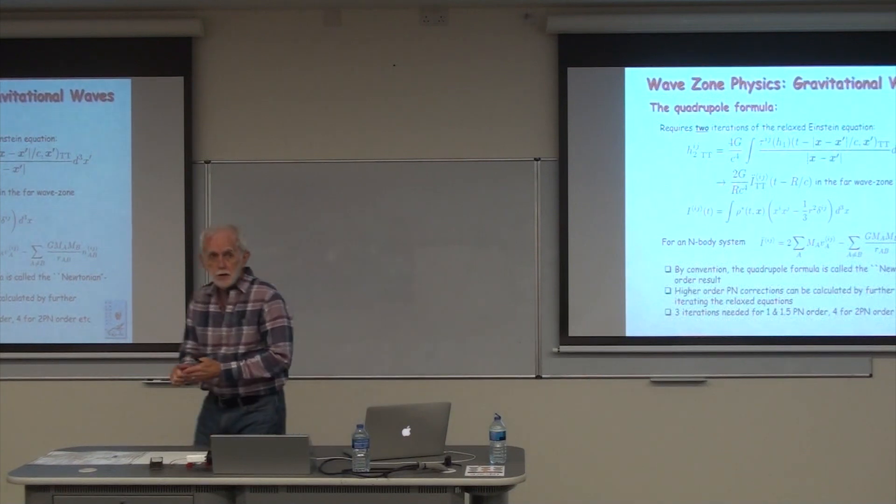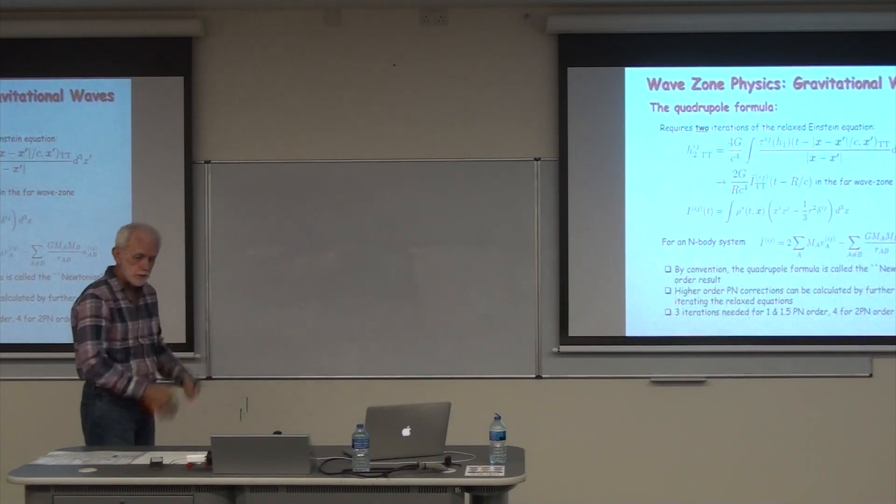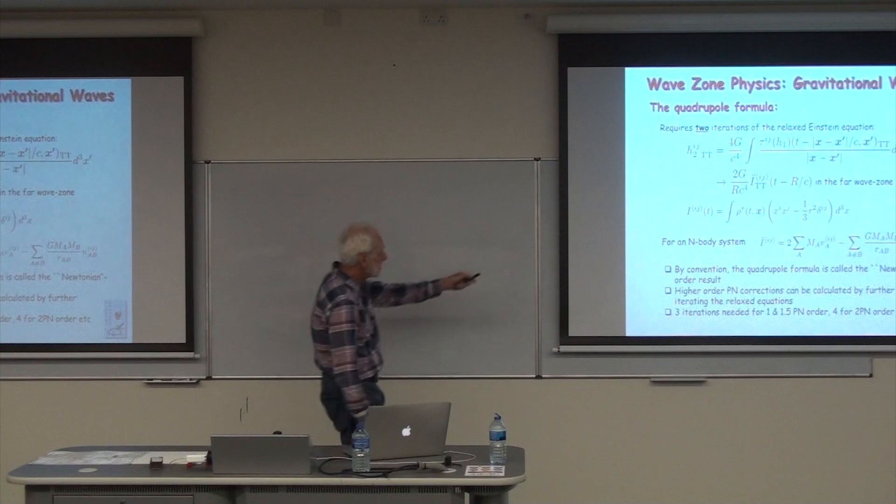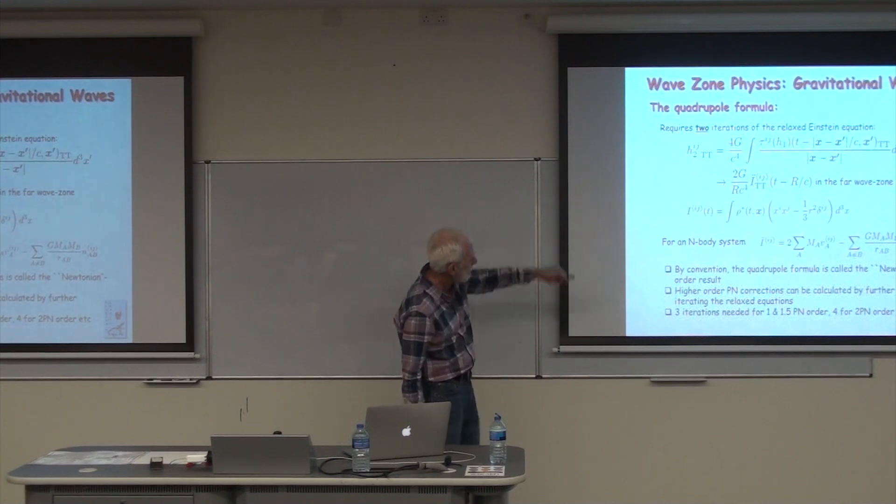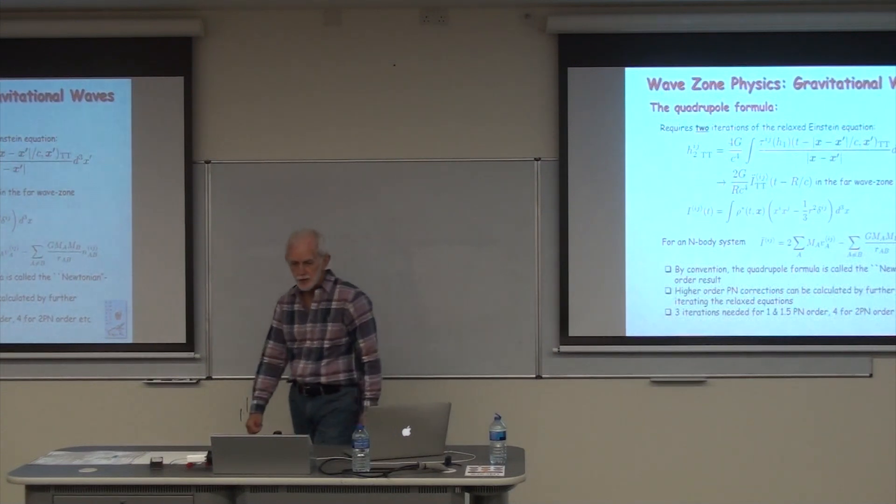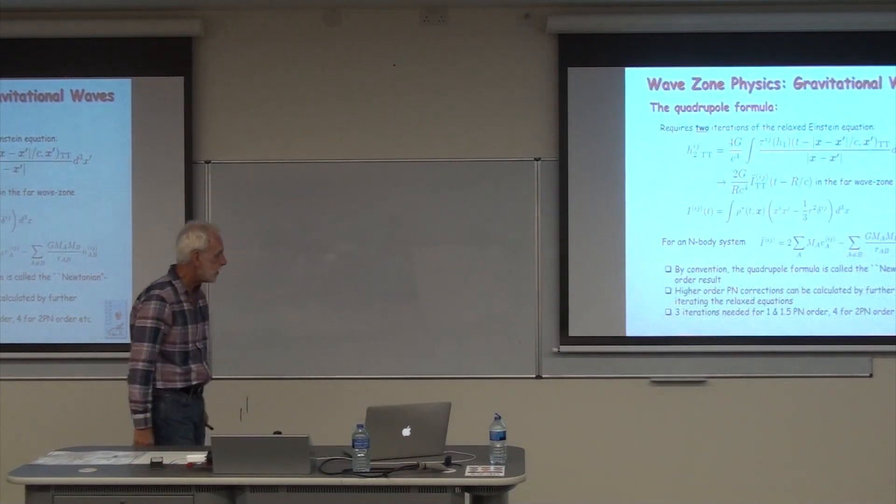So we reached, in the faraway wave zone, this quadrupole formula that says the gravitational field, which you might detect by a detector, is at lowest order, lowest post-Newtonian order, given by the two time derivatives of the quadrupole moment tensor of the source.